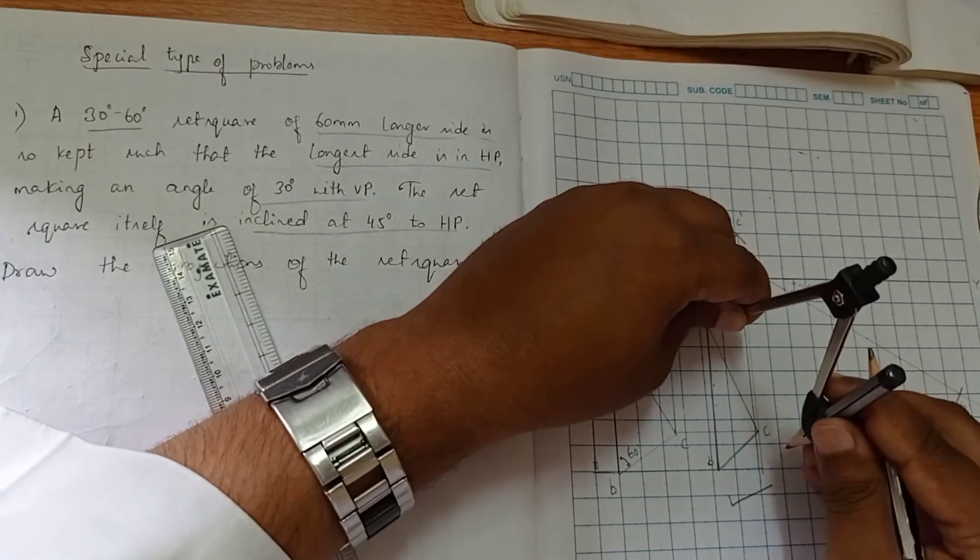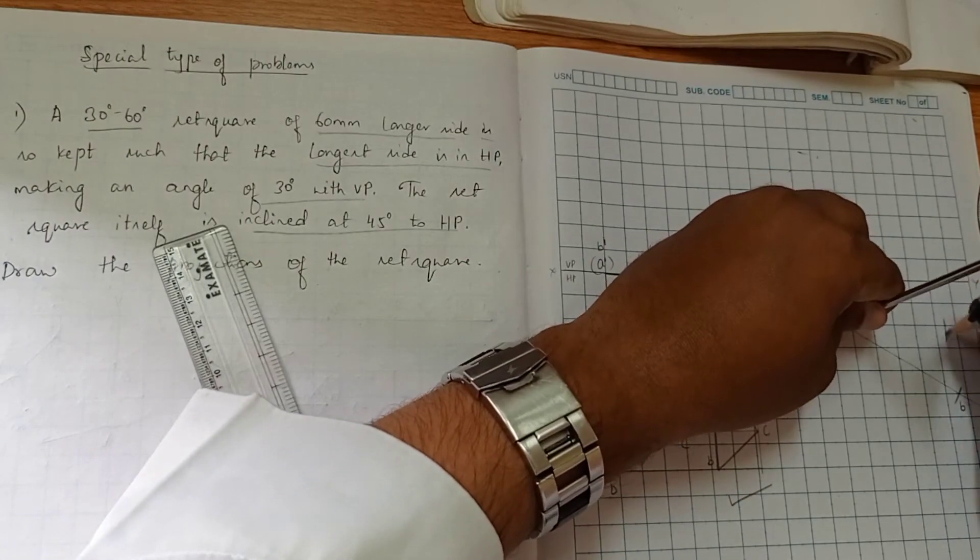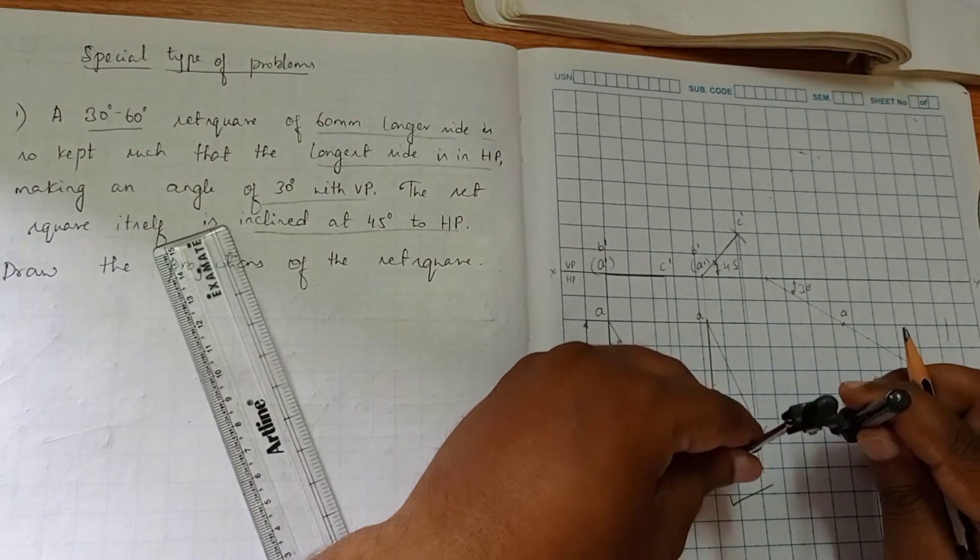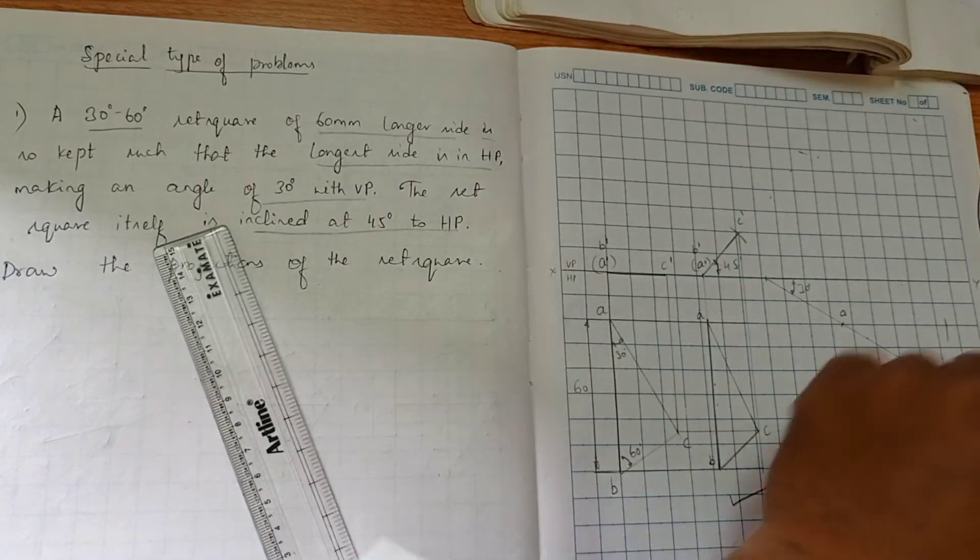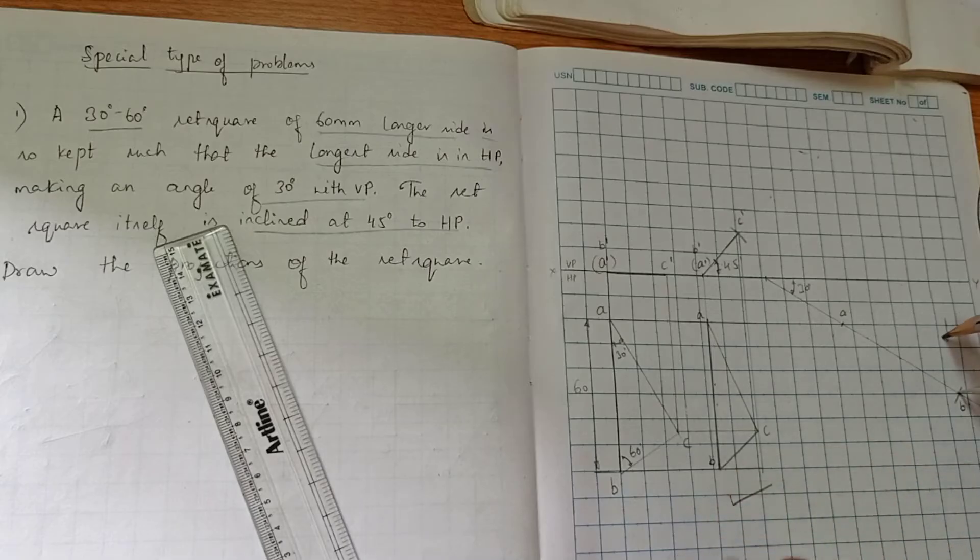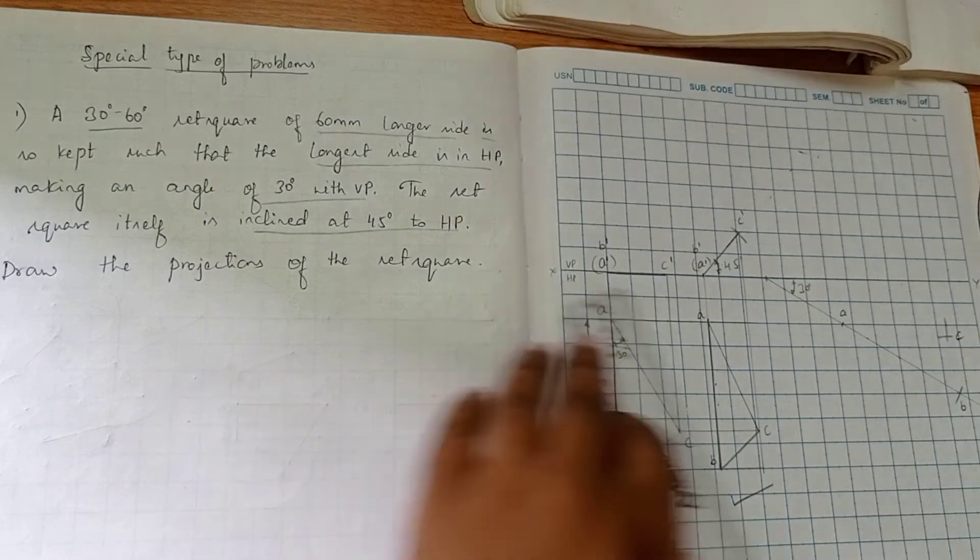From A to C first, and then from B to C. So we get C here. Now we have to join.